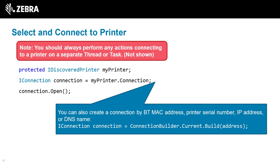The next section identifies discovered printers and surfaces any errors to the user. When connecting to a printer, it's important to run the connection on a separate thread so it doesn't impact the rest of the application's performance. Since the printer is a peripheral device, you don't want connection timeouts affecting the app. Discovery is one connection method, but you can also connect directly if you already know the MAC address, serial number, or IP address.